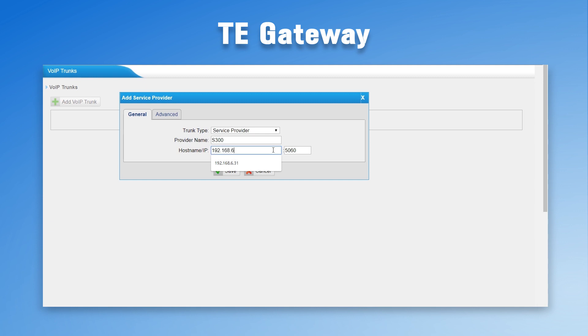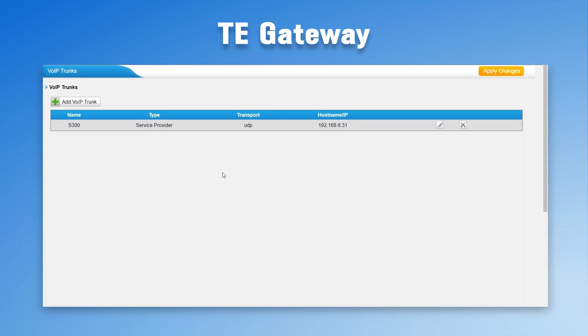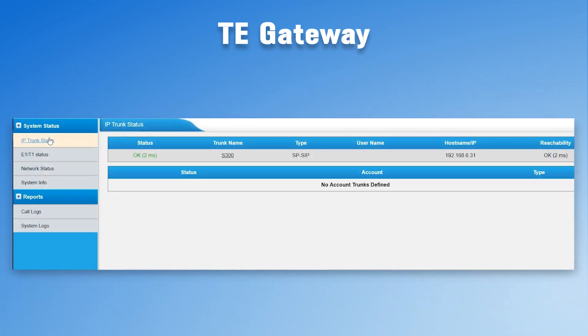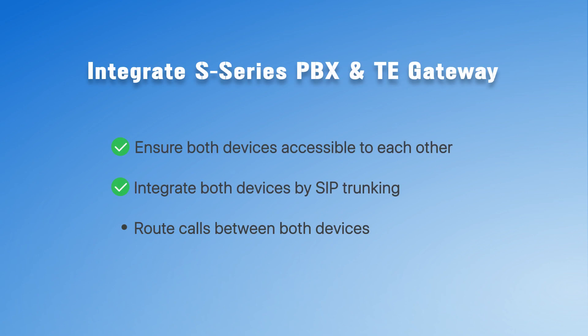The service provider mode can also be applied to the local network environment scenario. So we simply enter the private IP of the PBX and don't forget to check the connection status — make sure it has been activated. Now, two devices have been connected.